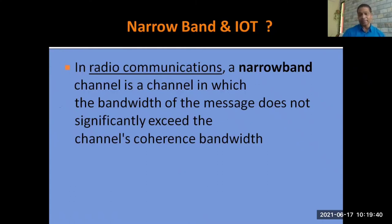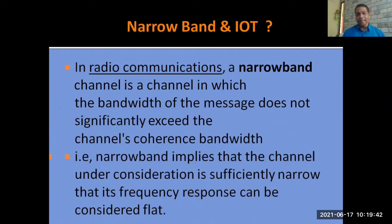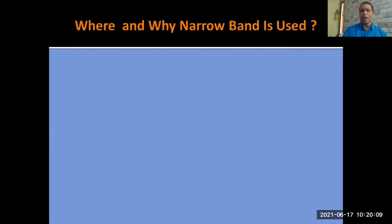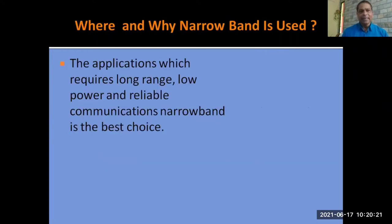What is coherence bandwidth? Narrowband implies that the channel under consideration is sufficiently narrow enough that its frequency response can be considered flat throughout that frequency band. The application which requires long range, low power, and reliable communication — narrowband is the best choice.